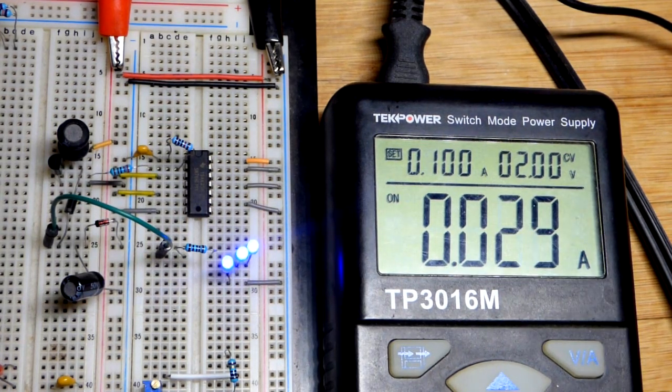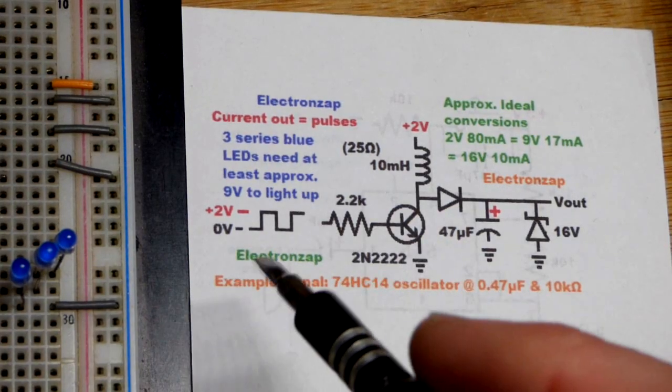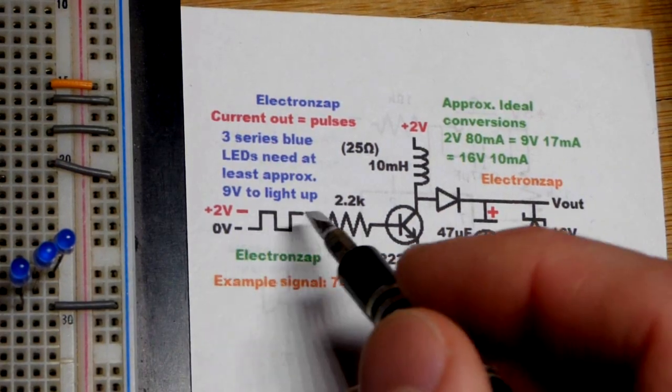As you can see when I turn the power on, they do light up. The first thing that we need for this circuit is an oscillating signal.